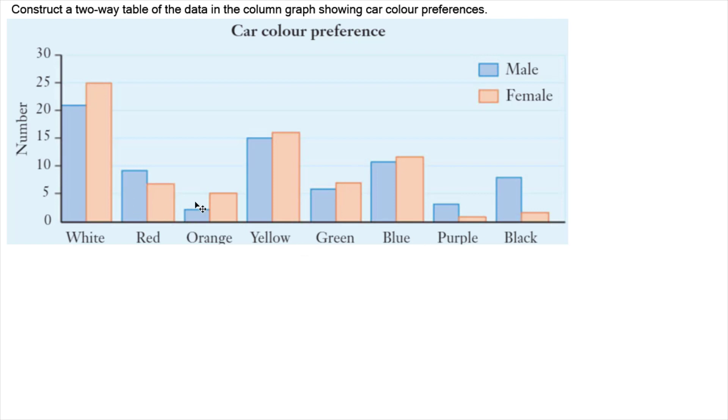So we have here data about color preferences between males and females. We can see that there are 21 males who like a white car and 25 females who like the white car, and that carries throughout the graph. We want to turn all of this information into numerical data in a two-way table.